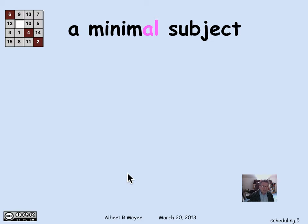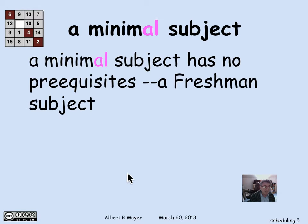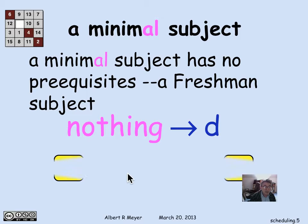Now, a key idea that we're going to be examining in learning how to do scheduling is the idea of a minimal subject. So the definition of a minimal subject is a subject that has no prerequisites, no arrows in, a freshman subject. So nothing comes in. And there are three examples of subjects with no prerequisites in the chart, in the preceding chart, namely 18.01, 8.02, and 6.001.